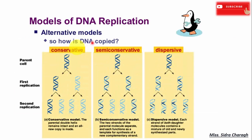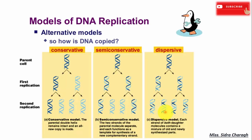There were three models suggested for DNA replication: conservative, semi-conservative, and dispersive. In the conservative model, it suggests that the parental DNA remains together and the newly formed daughter strands are also together. In the semi-conservative model, the two parental DNA strands serve as templates for new DNA, and after replication each double-stranded DNA contains one parental strand and one new daughter strand. In the dispersive model, after replication the two daughter DNA molecules have alternating segments of both parental and newly synthesized DNA interspersed in both strands.